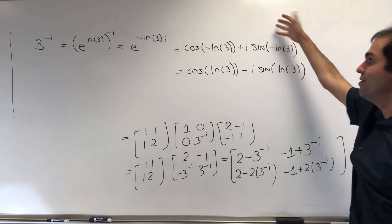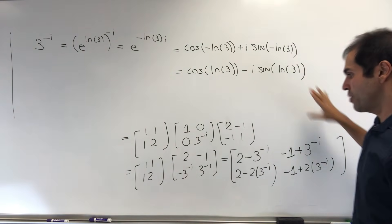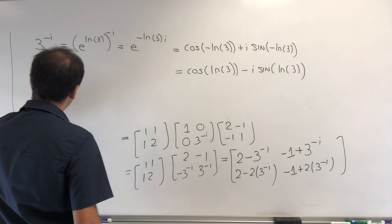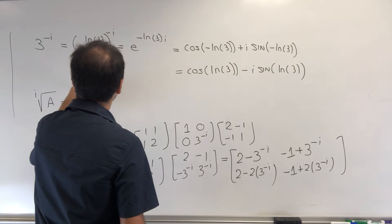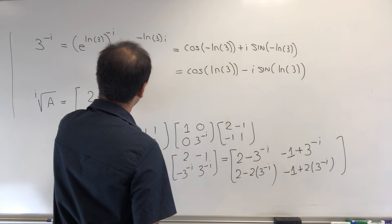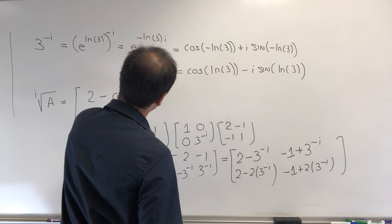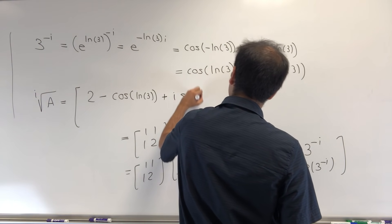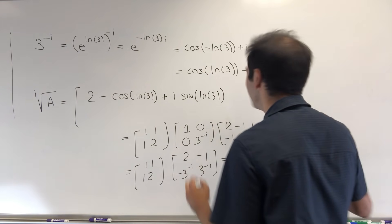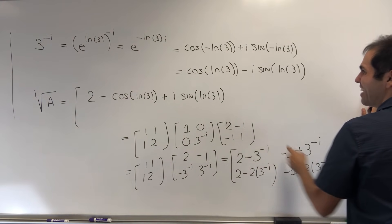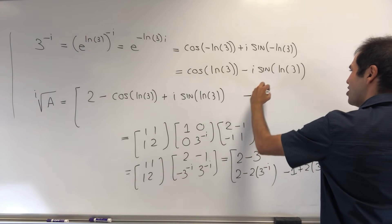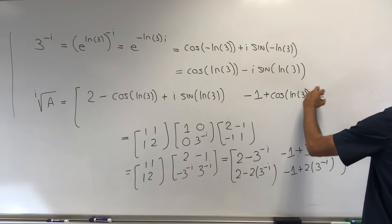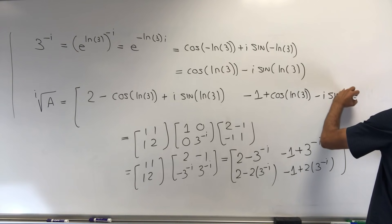OK. And then, well, we have a more explicit expression. Let's just plug this into our answer. So again, the i-th root of A in this case then becomes [2 - cos(ln(3)) + i·sin(ln(3)), -1 + cos(ln(3)) - i·sin(ln(3)); ...].